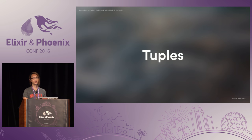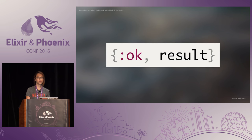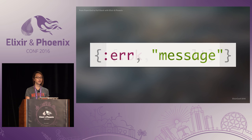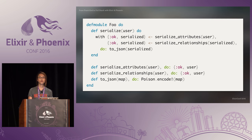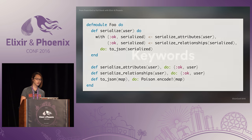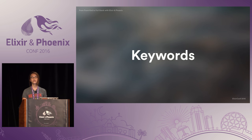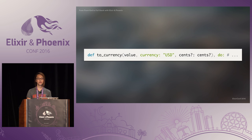Tuples shine when they're used as tagged tuples, and even more so when combined with pattern matching. Many standard library functions return tagged tuples by default, and the bang version of the function will raise an error if it fails. In Elixir 1.2 and beyond, you can also use the with keyword, which works really nicely with tagged tuples — you can extract the value from the tuple and pass that into your function. Finally, there's also a special form combining tuples with lists known as keyword lists. They're best used as options for functions and macros and not really recommended for anything else.